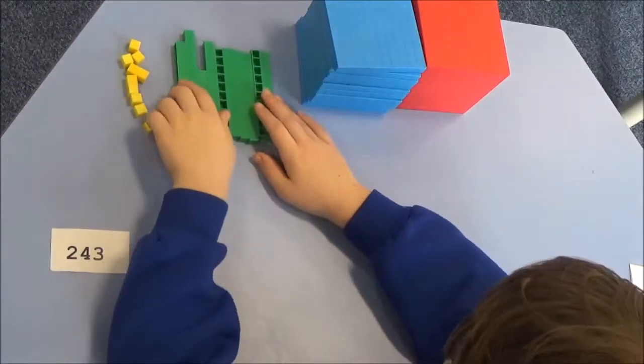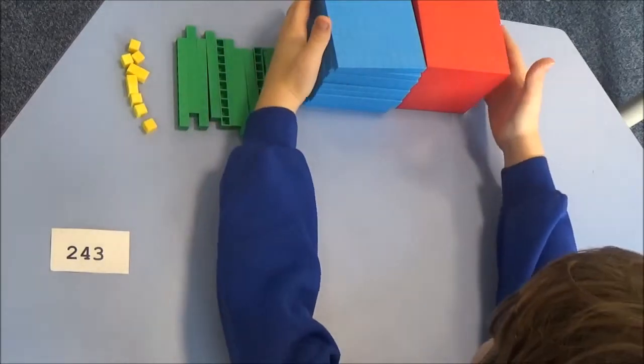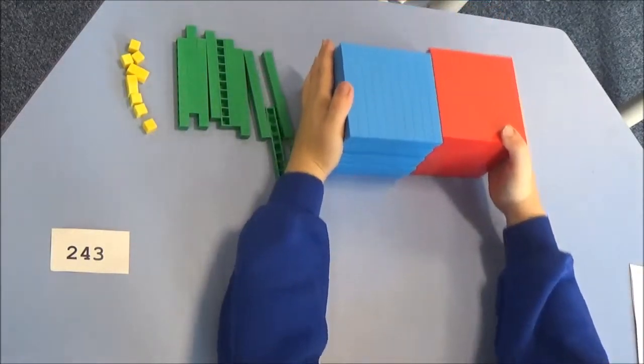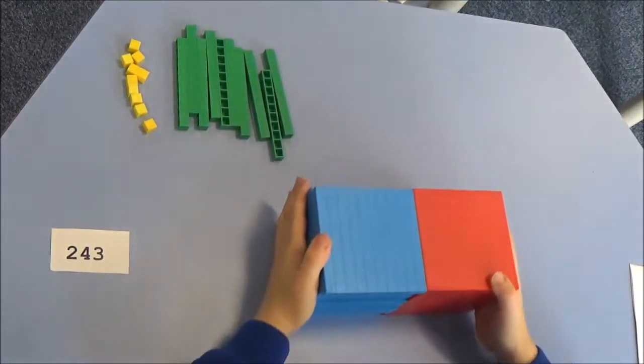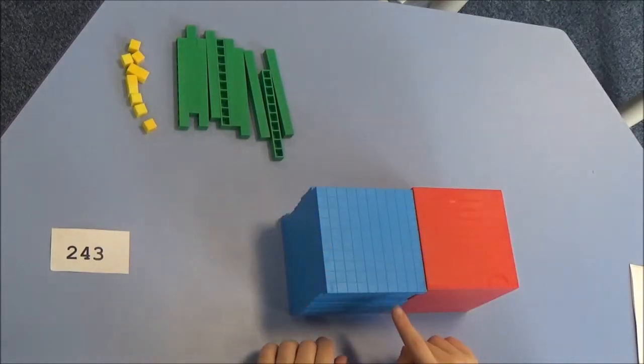And finally, ten hundreds make one thousand. One, two, three, four, five, six, seven, eight, nine, ten. Ten hundreds make one thousand.